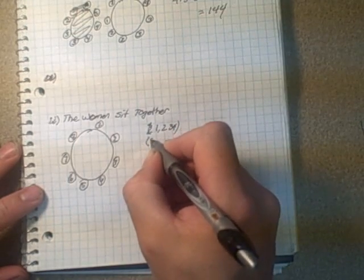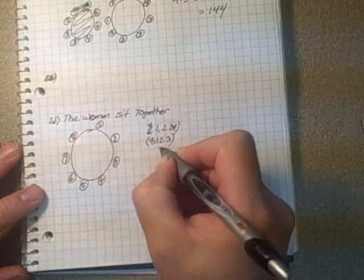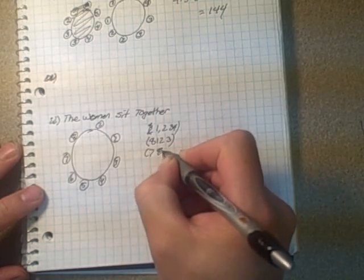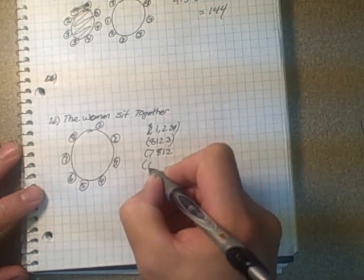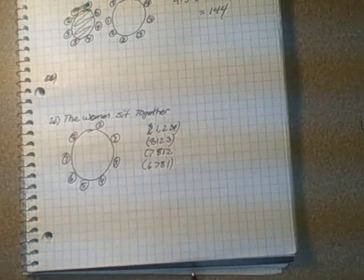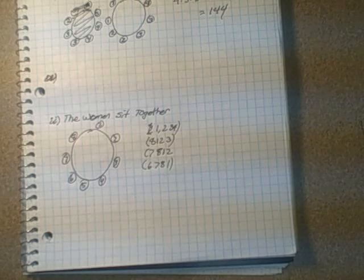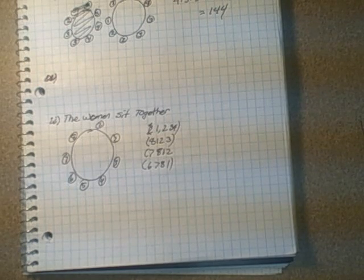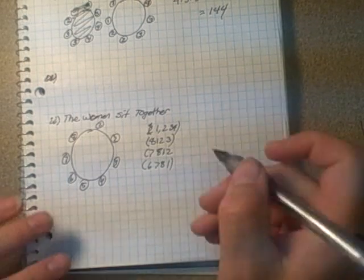There can also be seven, eight, one, and two. There can also be six, seven, eight, and one at the end. So those are the four possible ways that the women can sit in a box. There's four ways.